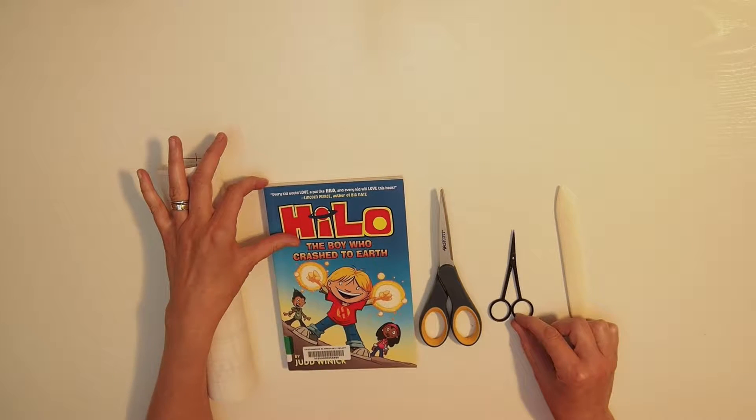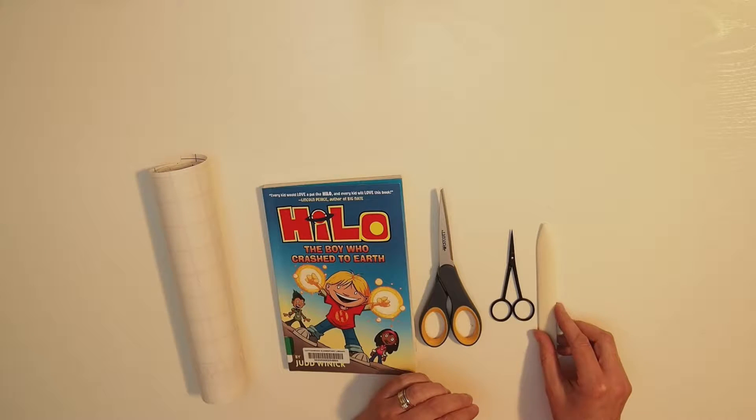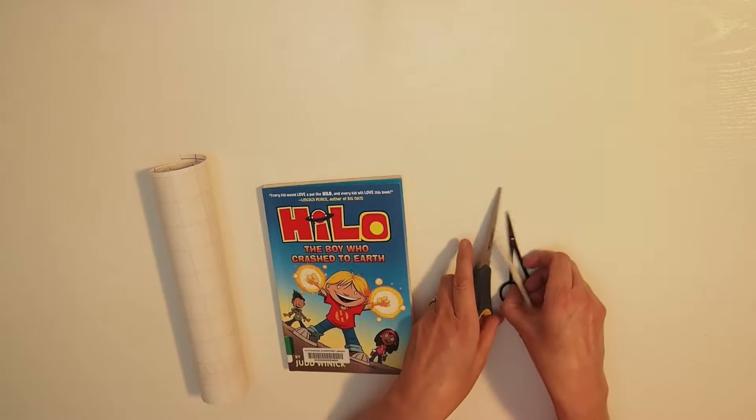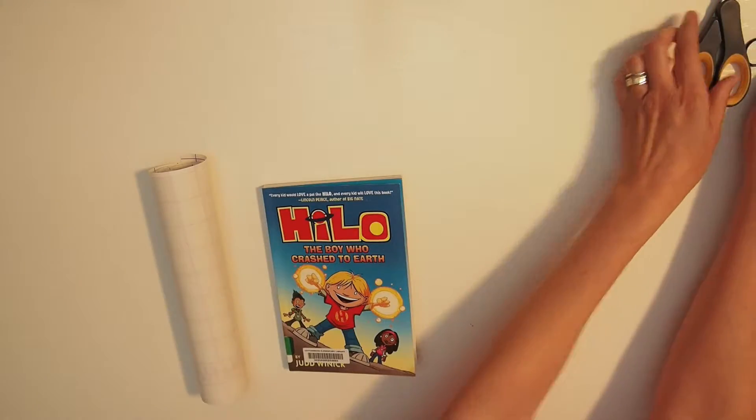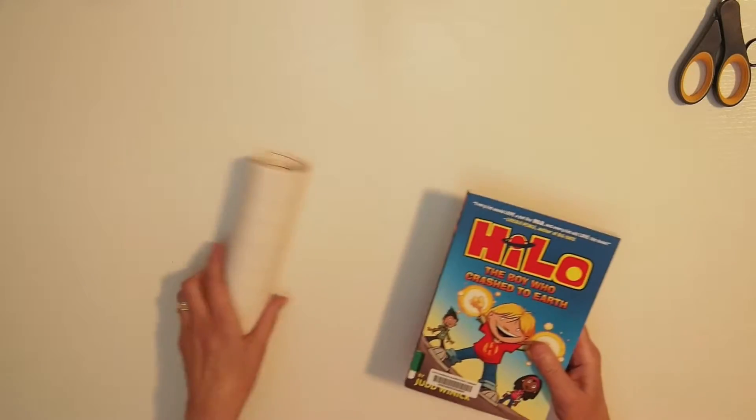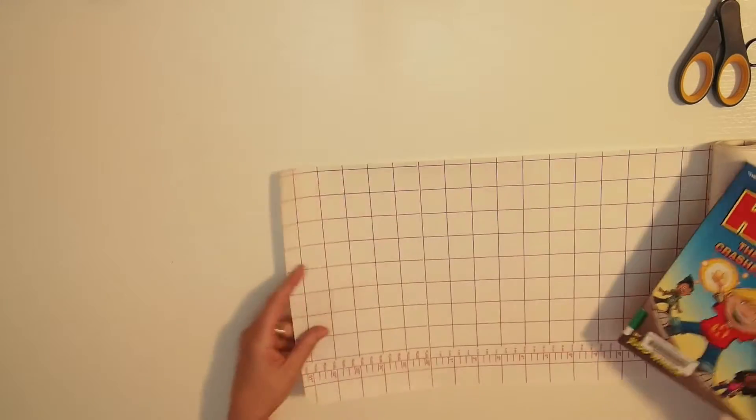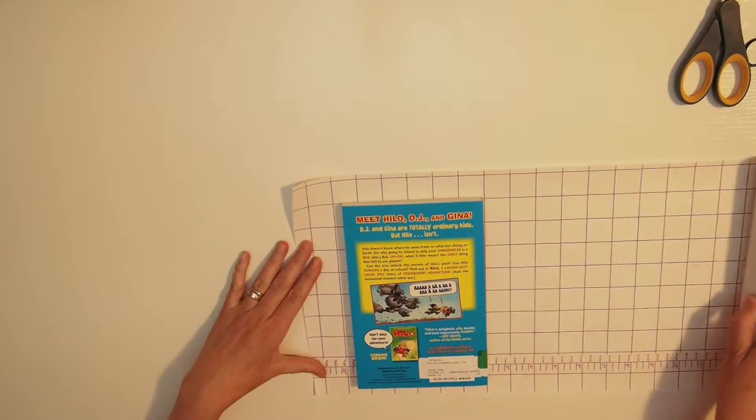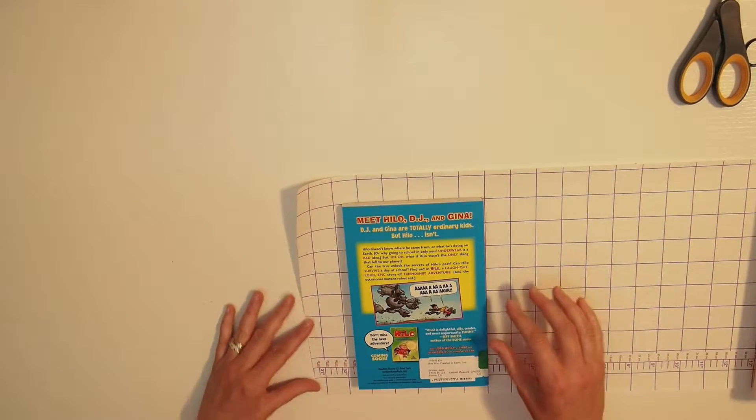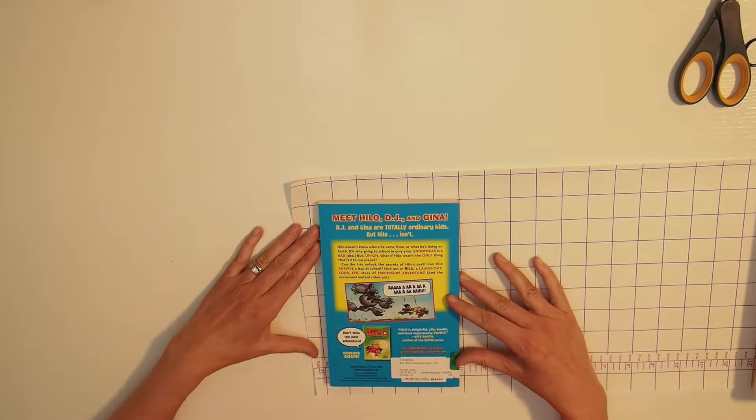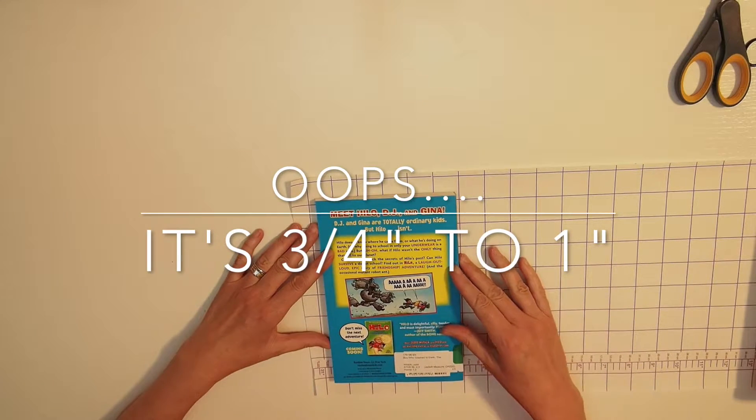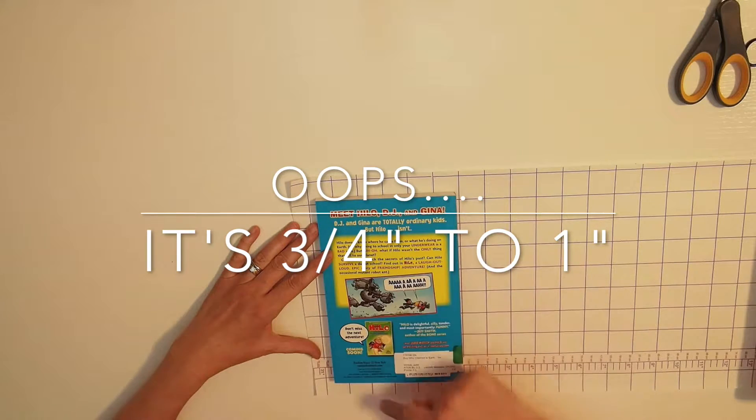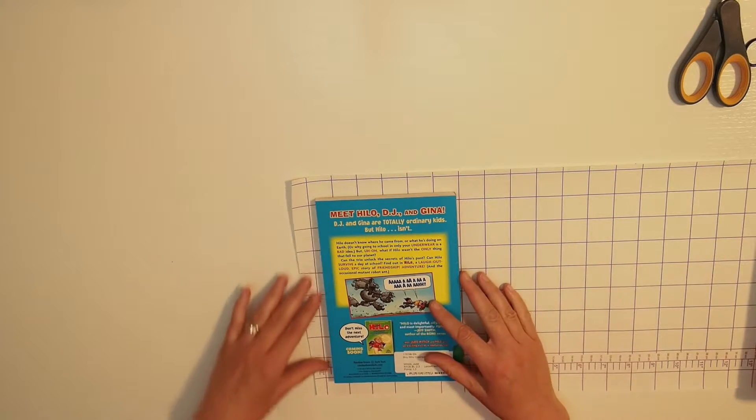So the first thing we're going to do is measure the laminate for the book. This can be individualized to each book, so what you want is a three-quarter inch to one inch border on all sides of the book: this edge, this side, and then the other side.